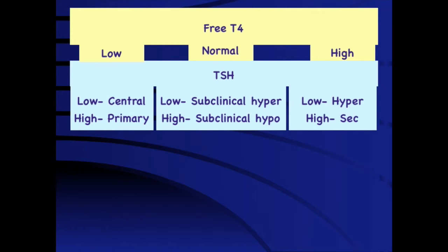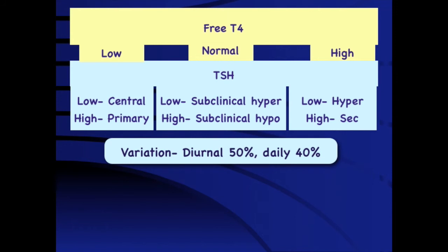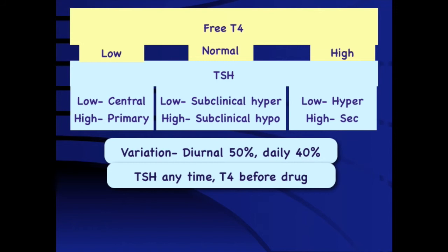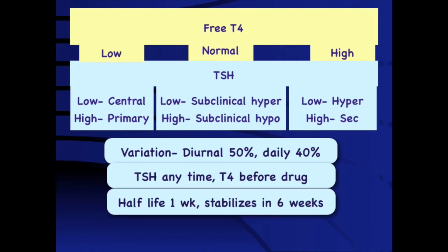A few practical points to keep in mind: there is significant diurnal variation in thyroid hormones as well as inter-day variation of significant impact. TSH variations, however, are not sufficient to really affect clinical interpretation, so TSH levels can be done any time of day. FT4 levels are affected by tablet intake and should therefore be measured just before the drug is taken in a patient on treatment. The half-life of thyroid hormone is approximately one week, so TSH levels stabilize within six weeks — there is no point repeating levels very quickly after changing the dose; wait at least six to eight weeks.